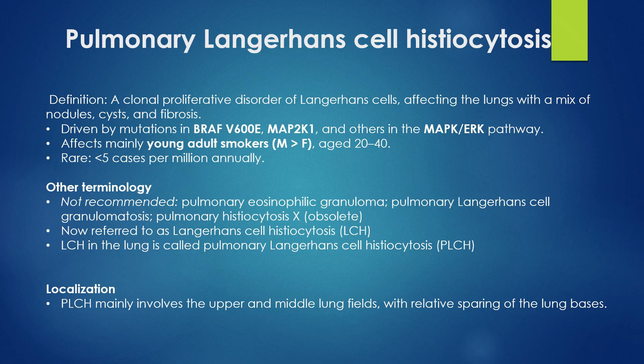It affects young smokers; males are affected more commonly than females, with the involved age group of 20 to 40 years. It is a relatively rare disease with a reported incidence of less than 5 cases per million annually. Older terminology no longer in use includes pulmonary eosinophilic granuloma, pulmonary histiocytosis X, and pulmonary Langerhans cell granulomatosis. Instead, we use Langerhans cell histiocytosis for systemic disease and pulmonary Langerhans cell histiocytosis if there is lung involvement.